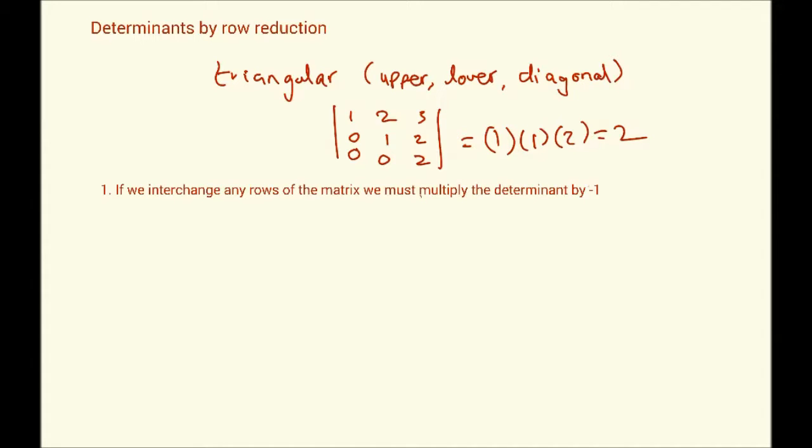So, this is our first point to keep in mind is that if we multiply, if we interchange any rows of the matrix, the matrix I mean of course is the matrix whose determinant we're trying to calculate, then we must multiply the determinant by minus one. So, there is an adjustment required in this case. Now, I will demonstrate all these through an example.